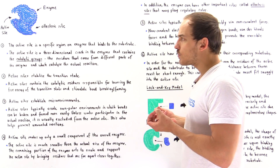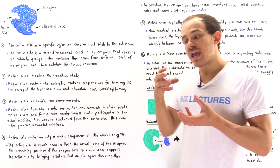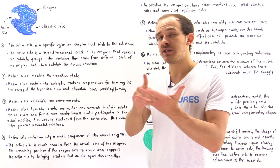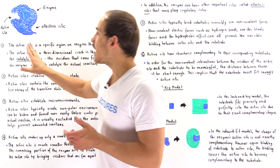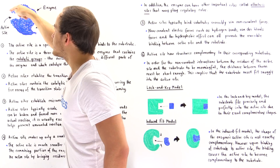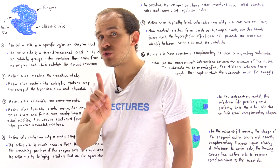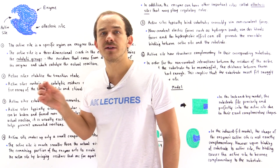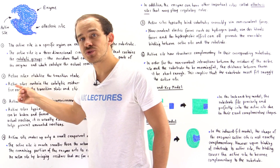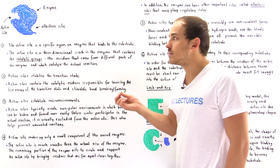We're going to discuss the six major properties of active sites. Property number one: the active site is the three-dimensional region found on the enzyme that is responsible for actually binding onto the substrate. Inside the active site — this three-dimensional crevice or crack in the enzyme — we have residues, those amino acids responsible for binding the substrate, as well as catalytic groups responsible for catalyzing that particular reaction.